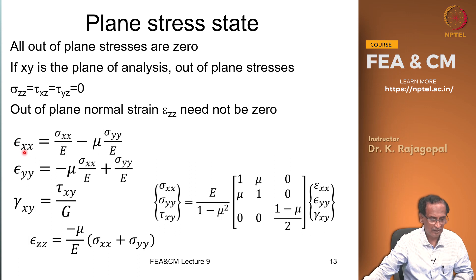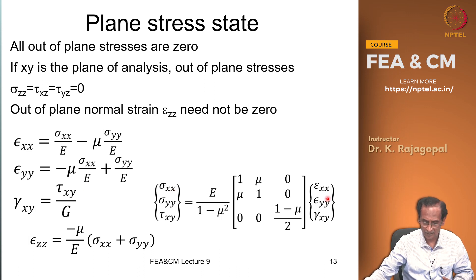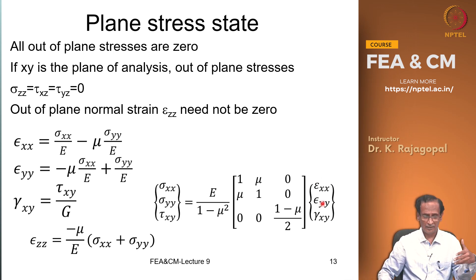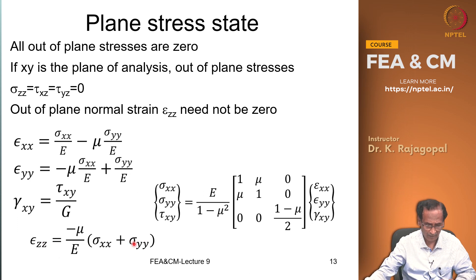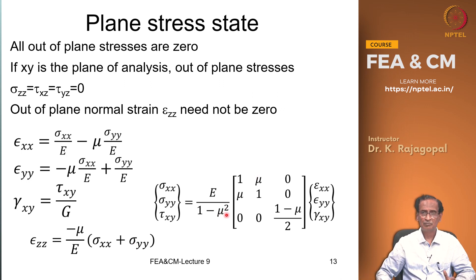The constitutive matrix for the plane stress state is very simple. We have only three significant strains: ε_xx, ε_yy, and γ_xy. We can invert this and write the stress in terms of strains: σ_xx, σ_yy, τ_xy equals E/(1−μ²) multiplied by the matrix [1, μ, 0; ...] and the strain vector. After analysis, the out-of-plane strain ε_zz can be calculated as −μ/E × (σ_x + σ_y). The Poisson's ratio can be any value within the reasonable limit of −1 to 0.5.